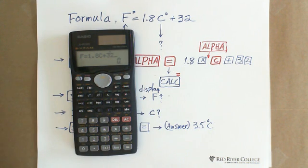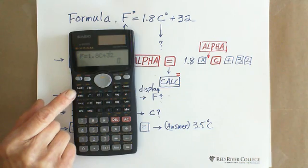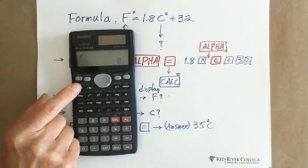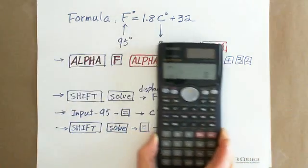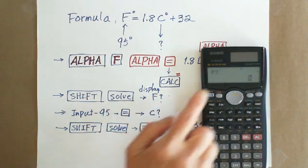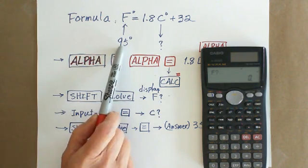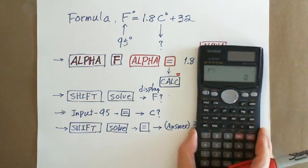Shift and solve, then display F question mark, because F is given. F is given 95, so you enter 95.